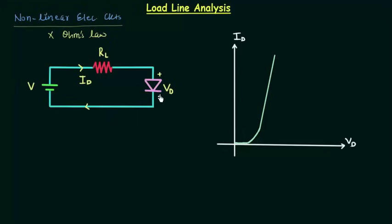In this circuit we have a PN junction diode, and the voltage across the diode is VD. RL is the load resistance and V is the external voltage source. The negative terminal is connected to the N side and the positive terminal is connected to the P side. ID is the current in the circuit, and we can apply KVL — Kirchhoff's voltage law.